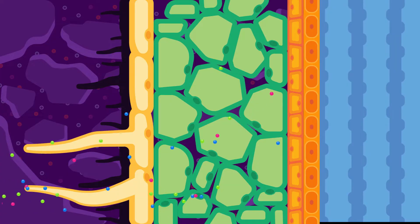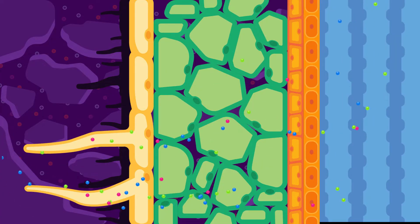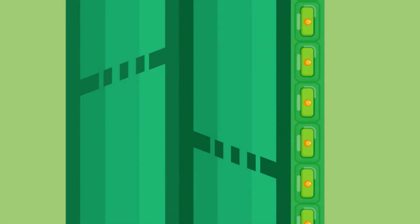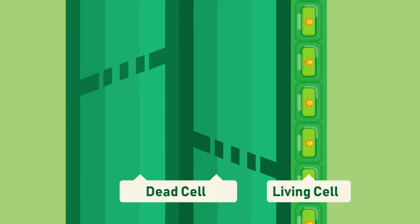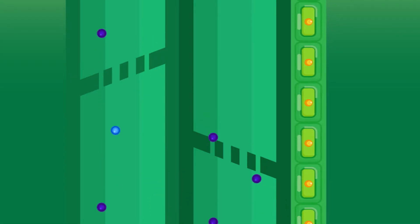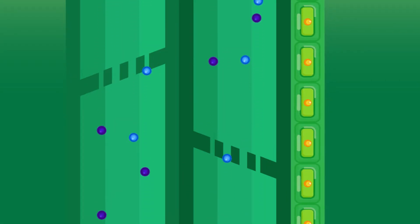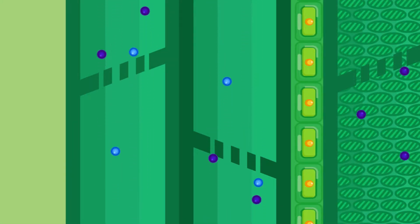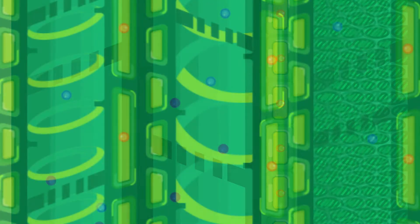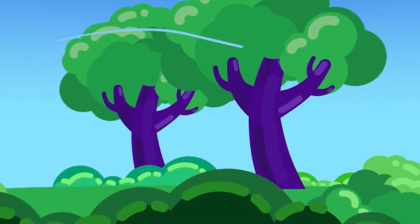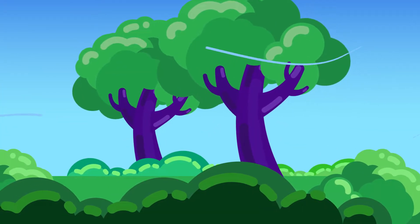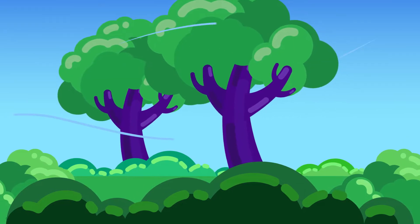Xylem vessels in plants transport water and mineral salts from the roots to the stem and leaves. They are long, cylindrical and hollow from inside. The vessels lack protoplasm and are dead. This allows water and mineral salts to easily move through the lumen. Lignin is deposited in three different formations, strengthening the walls and preventing the vessel from collapsing. An entire network of xylem vessels is strong enough to mechanically support the plant.